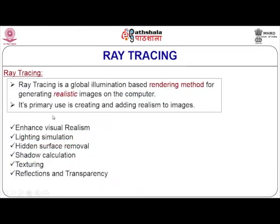The last step towards visual realism is ray tracing — a fantastic but complex technique. The algorithms are so complex that computing real-life-like objects requires handling many light interactions, colored lighting conditions, viewing positions, and surface properties. Ray tracing is a global illumination based rendering method for generating realistic images on the computer. Its advantages include enhanced visual realism, lighting simulation, hidden surface removal, shadow calculation, texturing, reflections, and transparency.